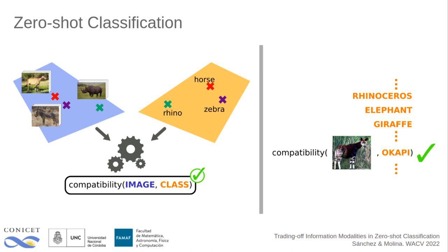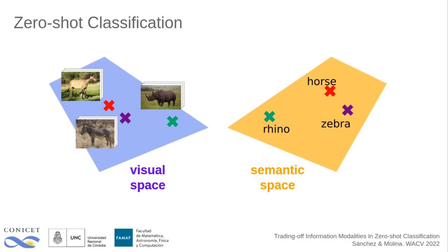The interplay between these two views of the same abstract concepts needs to be coordinated to be useful. However, different problems might require different trade-offs in terms of the information provided by these views. For instance, visual cues might be more relevant in discriminating fine-grained details, while semantic relations might help extrapolate to a different set of object classes.